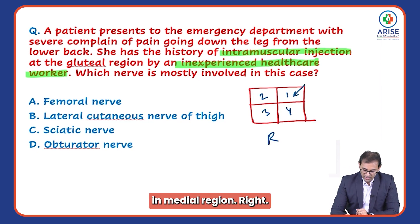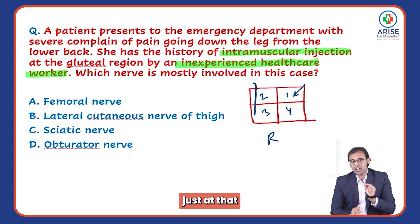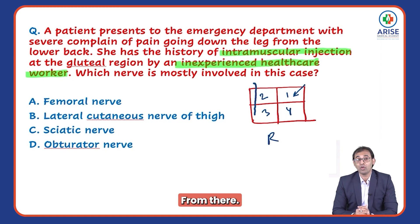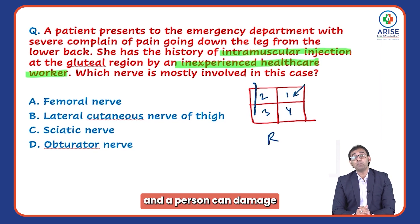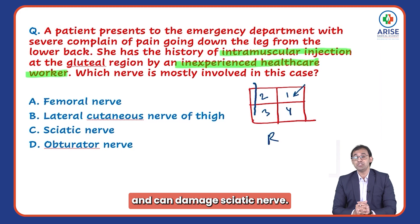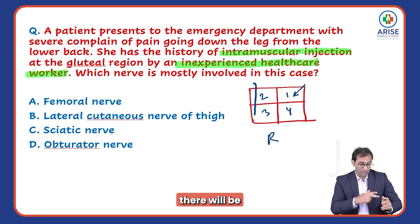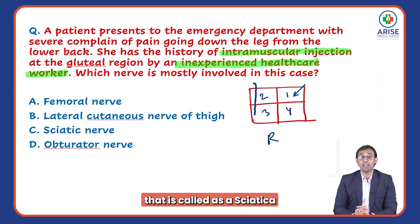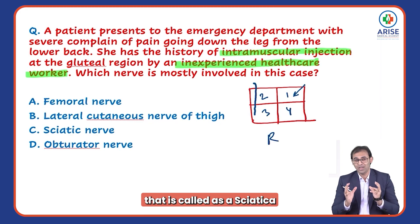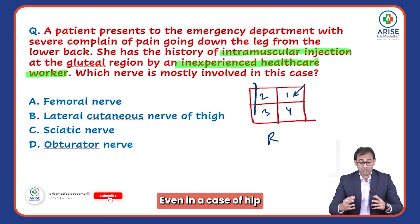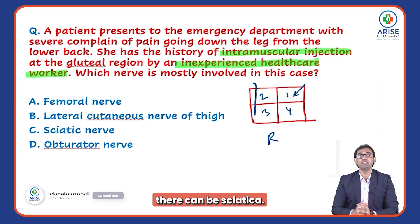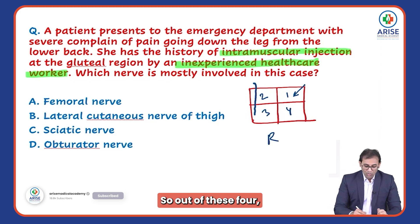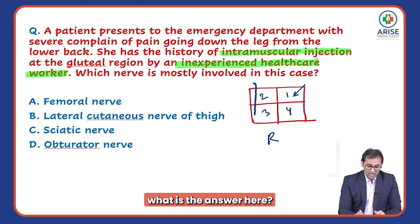If a person gives injection in the medial region, there is a dimple at the back side where the sciatic nerve originates. A healthcare worker can damage the sciatic nerve, which causes referred radiating pain towards the leg — that is called sciatica. Even in a case of hip bone fracture, there can be sciatica. So out of these four quadrants, the answer is the outer upper quadrant.